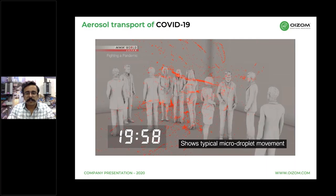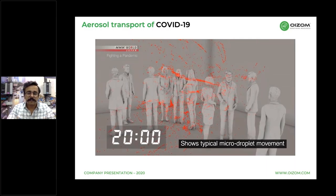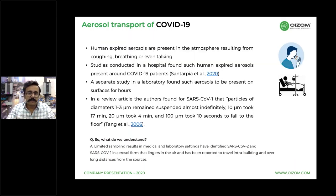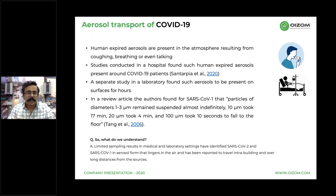What does all this say? Human expired aerosols are present — which is really shocking. These are droplets resulting from human activities like coughing, breathing, or even talking. Studies have suggested that such aerosols are found in hospitals where COVID-19 patients are admitted. These aerosols remain on surfaces for hours, and before they fall on the floor, they can be easily transmitted through those surfaces. Heavier aerosols take less time to deposit on the floor. A study found that particles with diameter from 1 to 3 microns were suspended in the air almost indefinitely, whereas heavier particles like 100 microns fell to the floor in just 10 seconds.